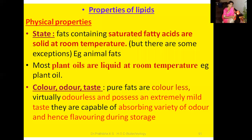First let us go through state. Fats containing saturated fatty acids are solid at room temperature. You can differentiate fats into two types: oil fats and solid fats. Most animal fats are solid fats. Most plant oils are liquid at room temperature, for example plant oils. However, there are some exceptions to this rule — plant oils may also exist in solid form due to conversion processes.